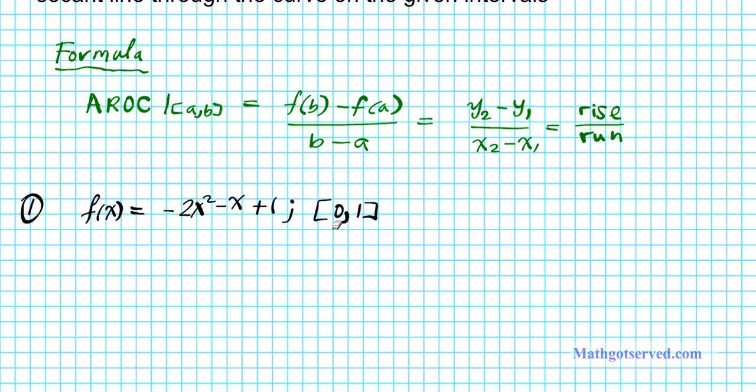You want to note that 0,1 is an interval not a point, an interval along our x-axis. The lower bound is a and the upper bound is b. So a is equal to 0.